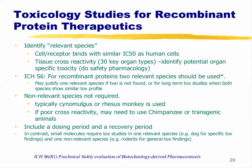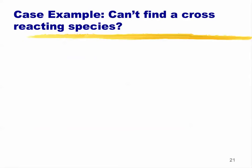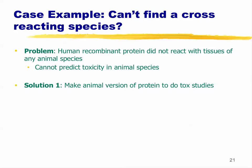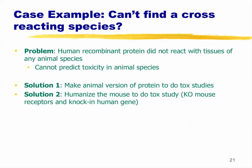For small molecules you typically use one non-relevant and one relevant model, but it's different for biologics — finding two relevant species is tricky. What if you cannot find a cross-reacting species? You actually have options: make the animal version of the protein to use in tox studies, or generate transgenic animals — a humanized mouse for tox studies — where you knock out the endogenous gene and knock in the human gene. These are rare situations but important to be aware of.